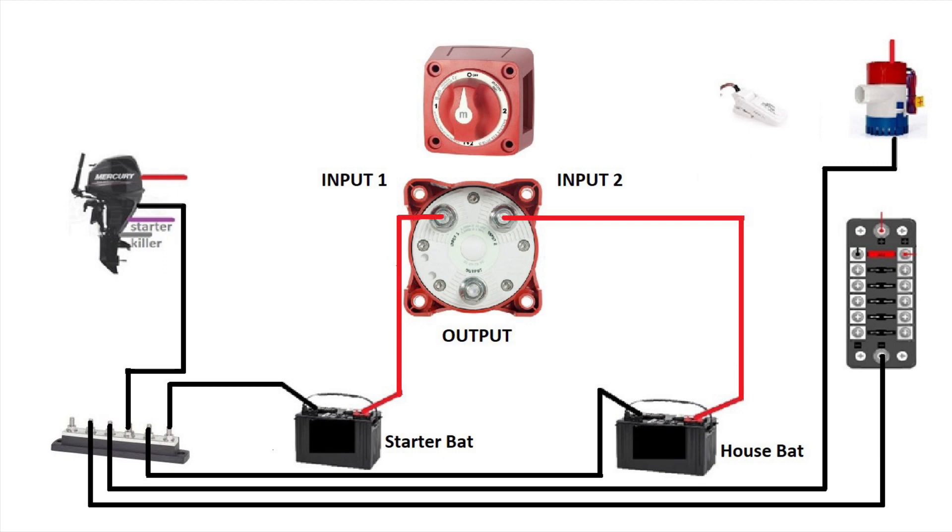Now that our two batteries are connected, we can connect our engine. We'll take the positive of the engine and connect it to the output of the switch. With the engine connected, now we can connect the fuse box. It goes connected at the same place, at the output of the switch.